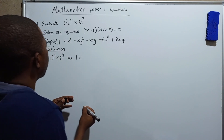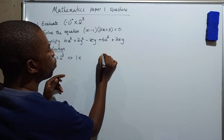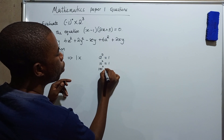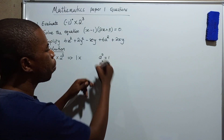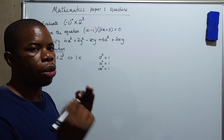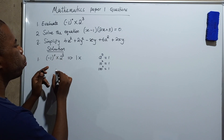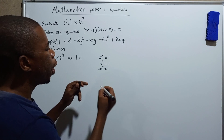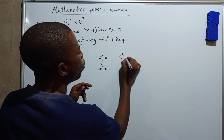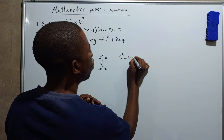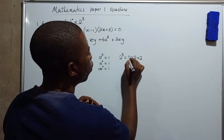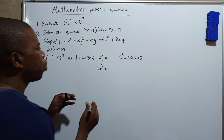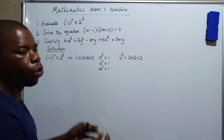Two to the power three means two multiplied by itself three times. Anything raised to power zero is equal to one — whether it's ten to the power zero, or a hundred to the power zero, it is still one, according to the laws of indices. So the open bracket negative one close bracket to the power zero equals one. Then times two to the power three means two multiplied by itself three times: two times two times two.